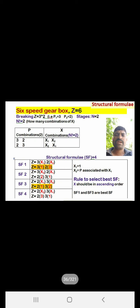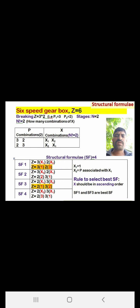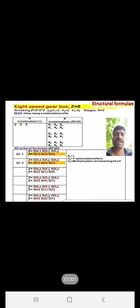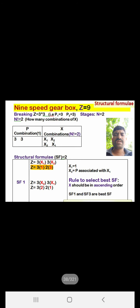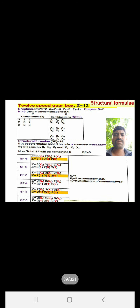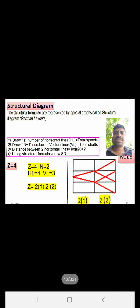For a six-speed gearbox, z = 6 can be written as 3×2 or 2×3, giving two stages. There are four total combinations from the n-factorial of x and p combinations (p1,p2 and p2,p1). Similar structural formulas have been written for z = 9, z = 8, and z = 12.